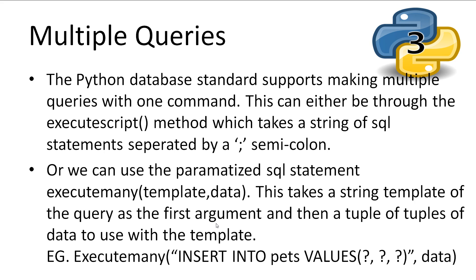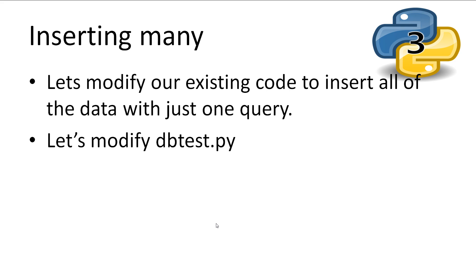Now let's look at making multiple queries. The Python database standard allows making multiple queries using the method executeScript, which takes a string of queries separated with a semicolon — which if you've worked with SQL before will be quite familiar. We are also provided with the method executeMany, which takes a tuple of tuples to use as data in a string template. Let's modify our code again. This time we'll insert all of the data with one query, and we'll also add some extra data using executeMany just so we can see how it's used.